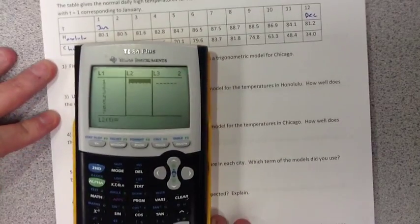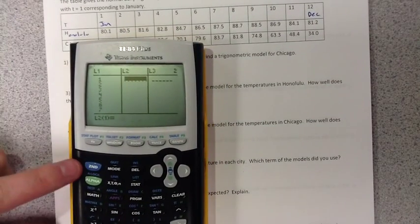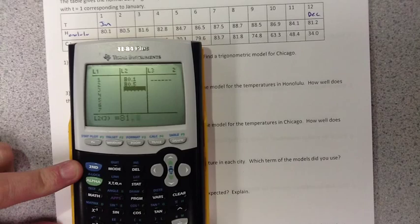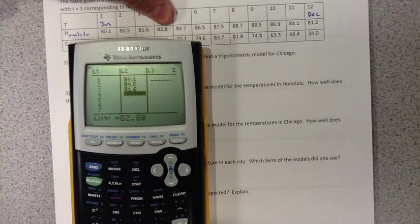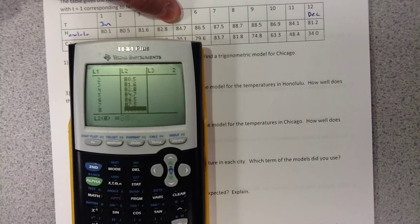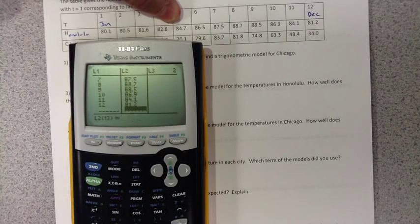So we're going to go 1, 2, 3, 4, 5, 6, 7, 8, 9, 10, 11, 12. Under L2, for Honolulu, we're going to put the average temperature. 80.1, 80.5, 81.6, 82.8, 84.7, 86.5, 87.5, 88.7, 88.5, 86.9, 84.1, and 81.2.